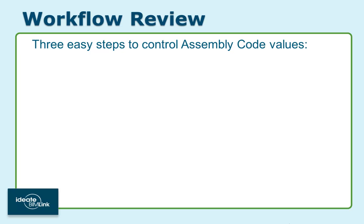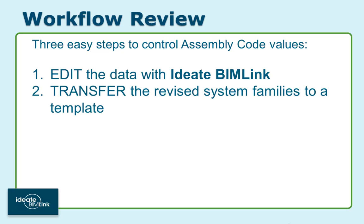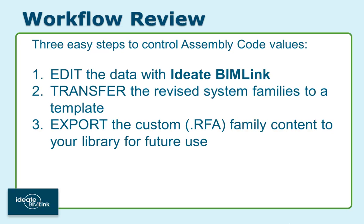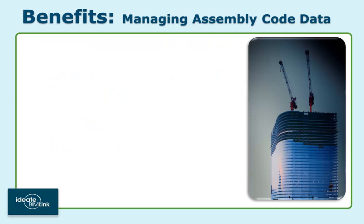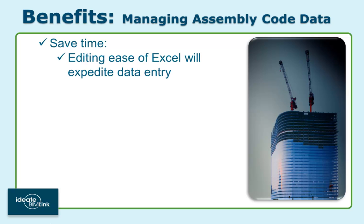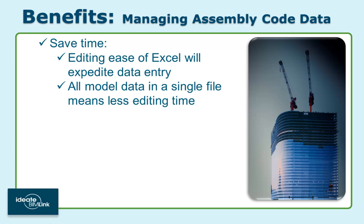To summarize, it's easy to update all your Revit model data by following these three steps. If you're using the assembly code data to facilitate your specifications or construction estimating processes, then using BimLink to edit this data will save you time in several ways. You'll be editing the information within Excel, which is significantly faster than within Revit. And because BimLink's multi-category method includes all the model data, you'll also be saving time by editing all the information at once.